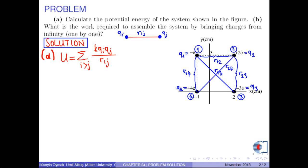Let the distance between q2 and q3 be r23, and between q2 and q4 be r24. Finally, let the distance between q3 and q4 be r34.